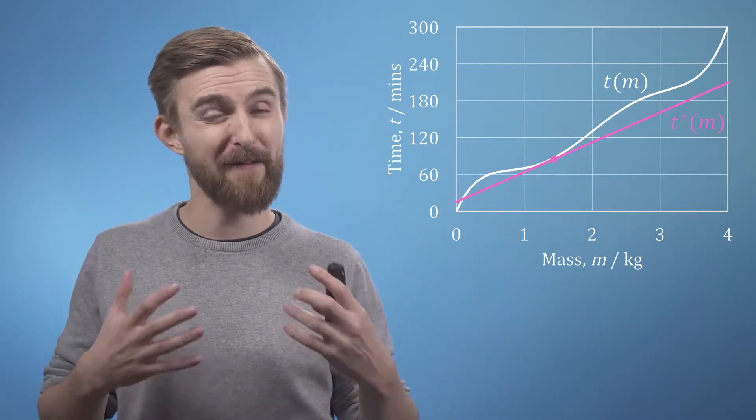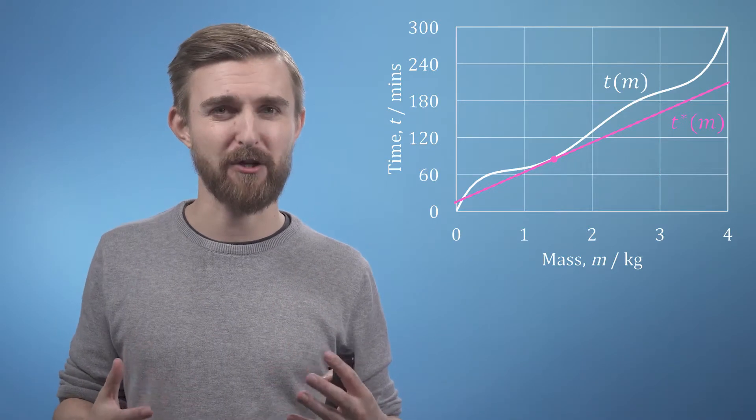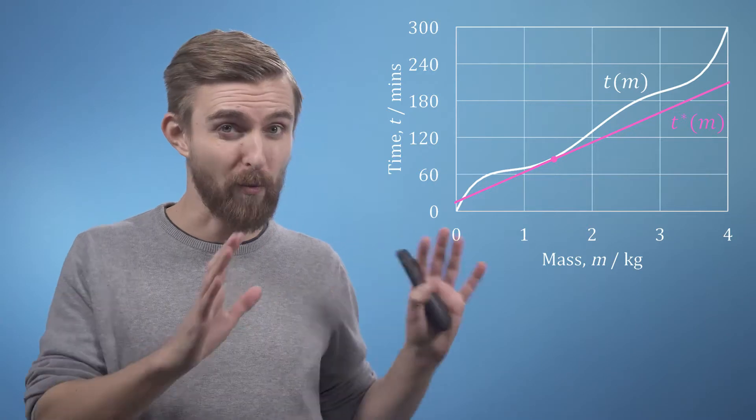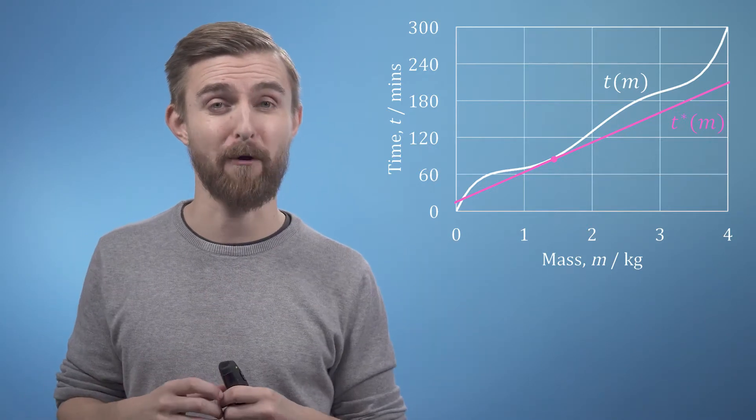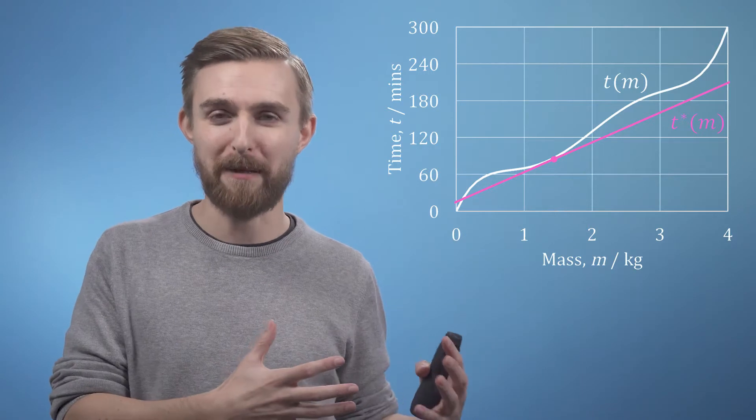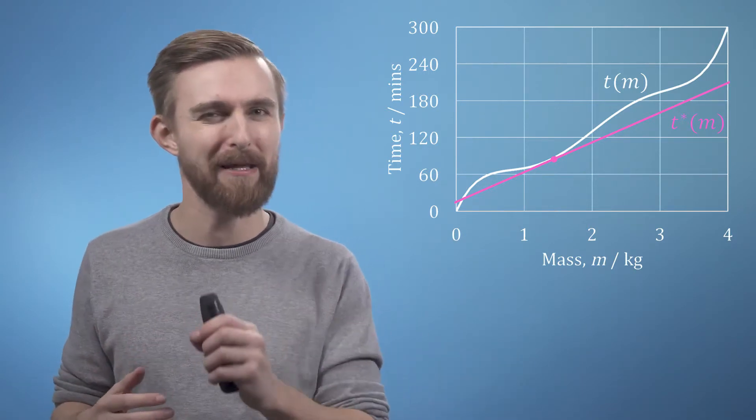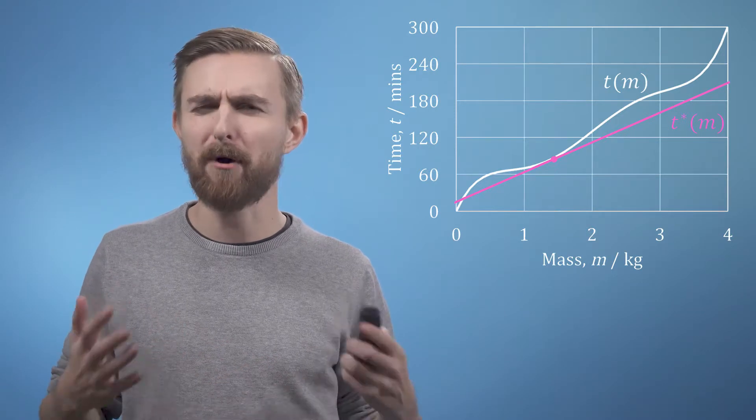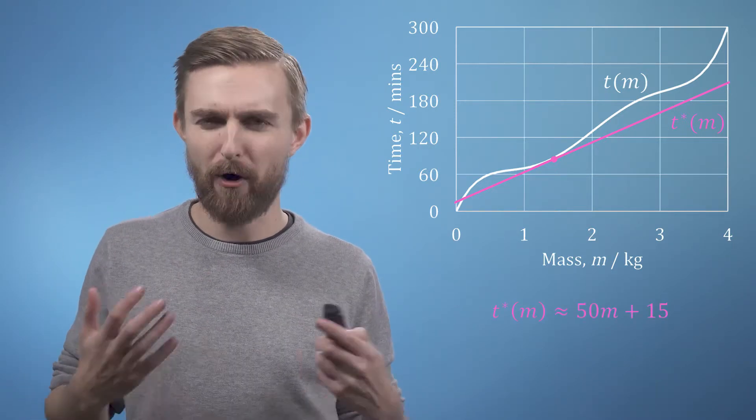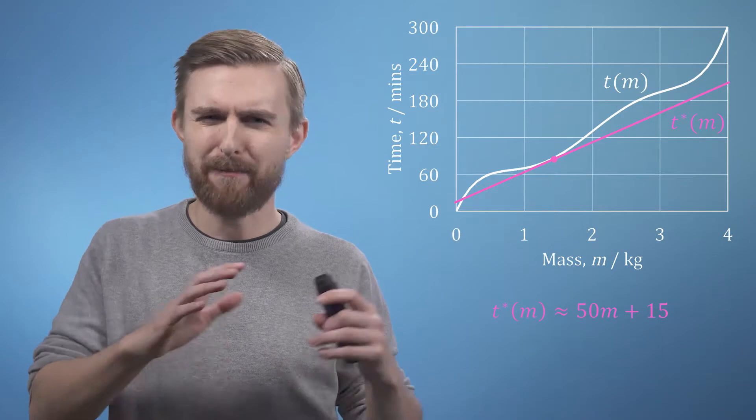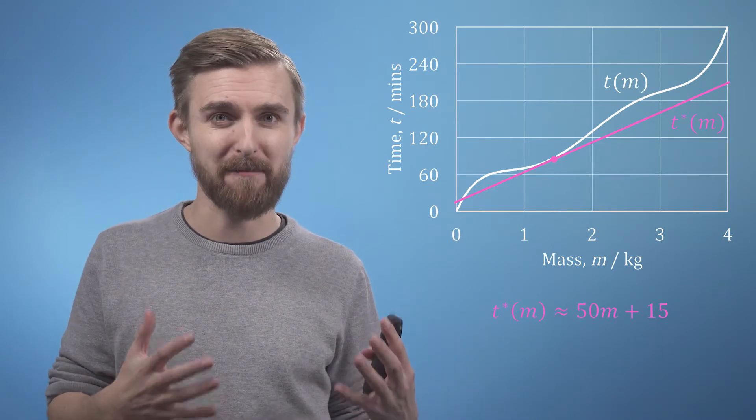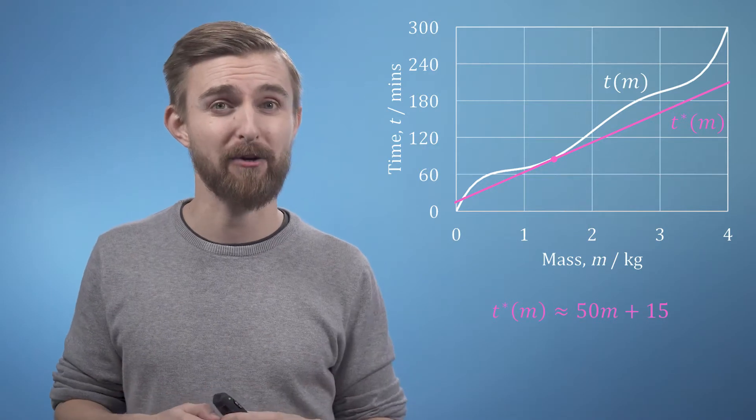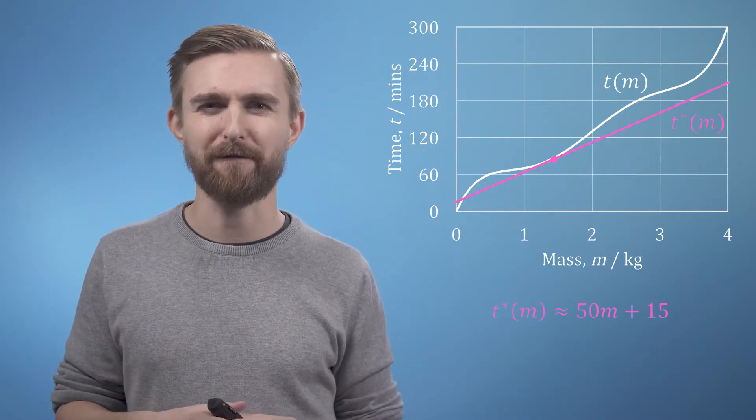This line is a fairly reasonable approximation to the function in the region close to the point of interest, but as you move further away, the approximation becomes pretty poor. However, this cookbook is not for people either roasting giant or miniature chickens, so we end up being able to write down an expression in a much more palatable format, where our approximation t star is approximately equal to 50 times the mass in kilograms plus 15. So, if you'd like to roast a 2 kilogram bird, leave it for about 115 minutes.